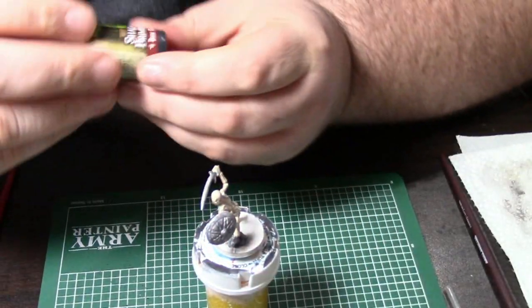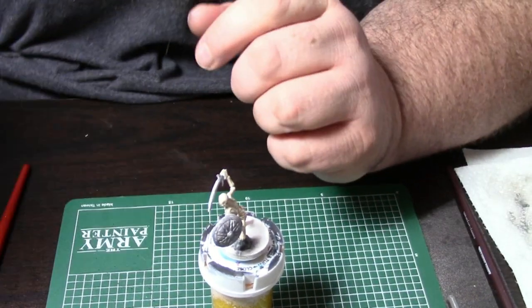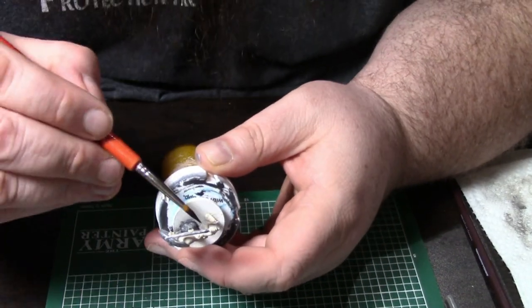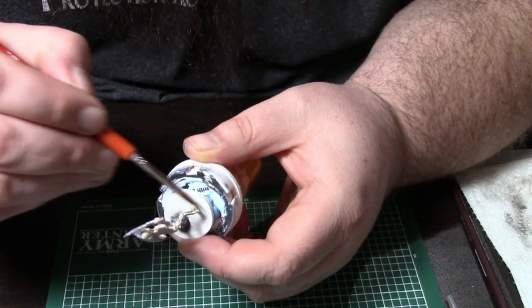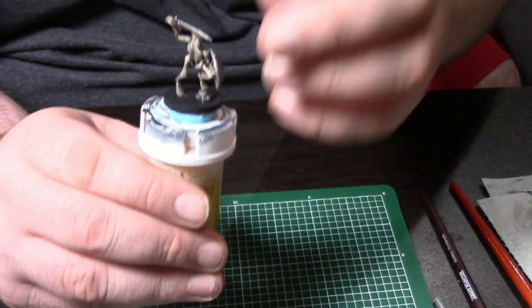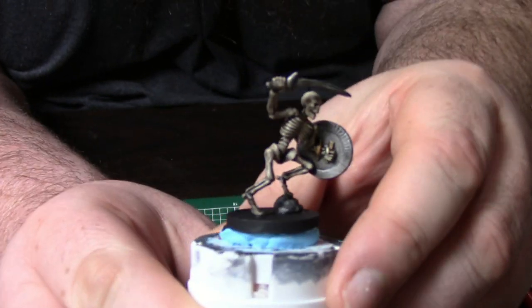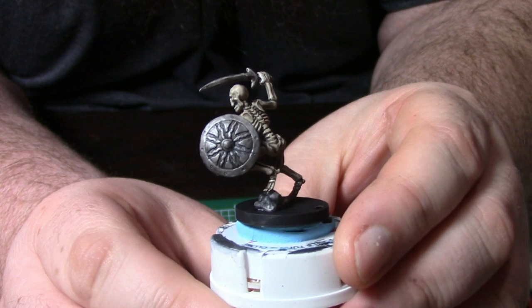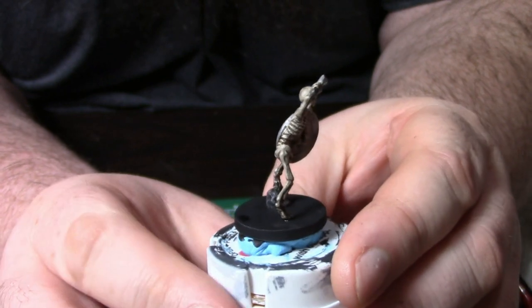Now what I'm going to do is apply a dark tone ink to the entire miniature. After the ink dries, if you want, you can go ahead and do a dry brush on the bones. But my personal taste is that I just like the grungy look of the bones.